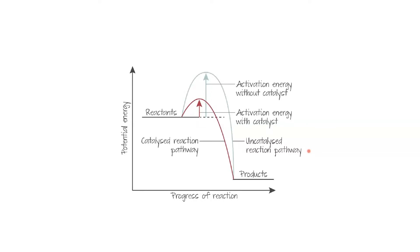Three main things when it comes to catalysts: first, a catalyst speeds up the reaction without changing itself at the end; second, a catalyst lowers the activation energy; and third, it does so by providing an alternative pathway. These three factors are important when it comes to the function of a catalyst.